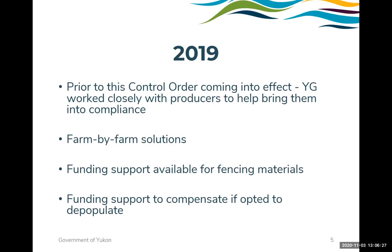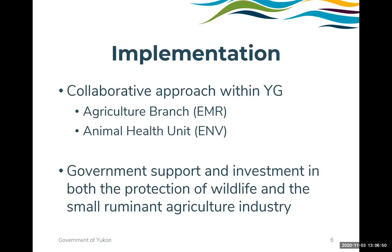In 2019, there was funding available to assist with the cost of fencing materials, as some of that investment was considerable. Folks who determined they would not be able to comply were eligible for compensation for the loss of their animals if they chose to depopulate, and we did have a few producers opt to depopulate. The Agriculture Branch within the government of Yukon has been quite critical as a link to the industry.